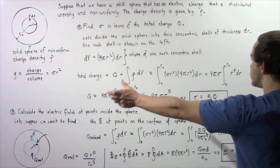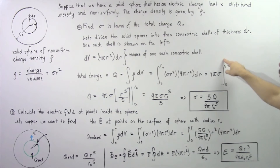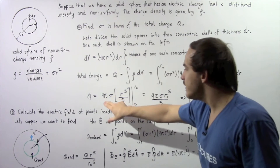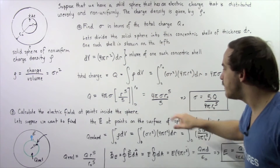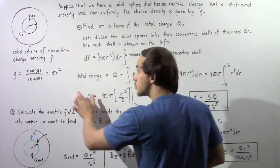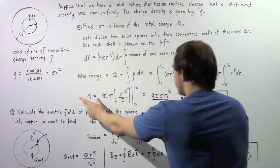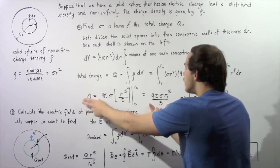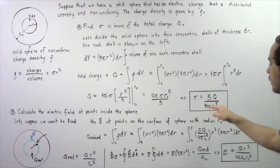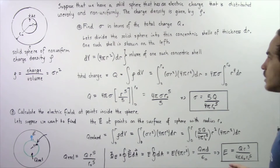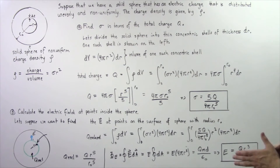Bringing out the constants, we have 4π sigma times the integral of r to the fourth power dr from zero to r-naught. Evaluating the integral gives 4π sigma r-naught to the fifth divided by five, equal to the total charge q. Rearranging and solving for sigma: sigma equals 5q divided by 4π r-naught to the fifth power. That completes part A — sigma is now expressed in terms of total charge q.